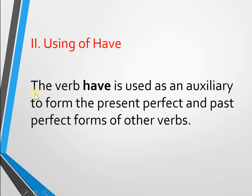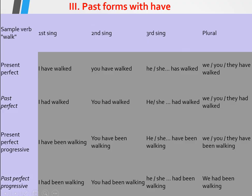Number two: using of 'have'. The verb 'have' is used as an auxiliary to form the present perfect and past perfect forms of other verbs.